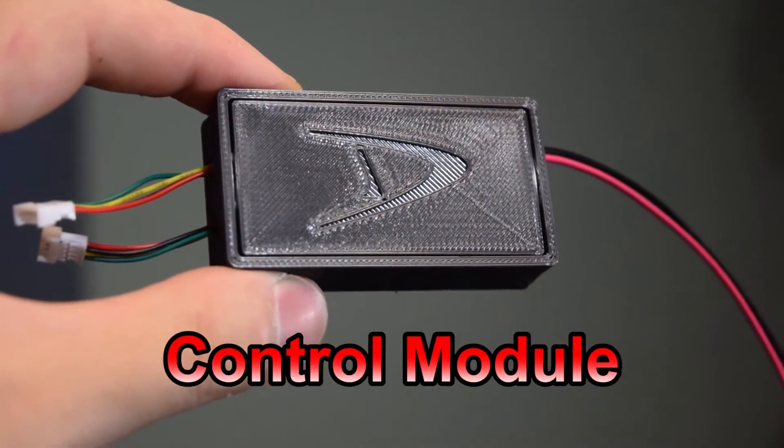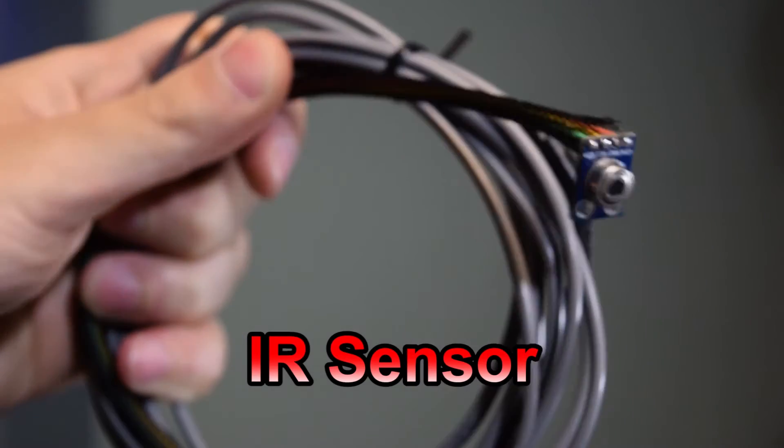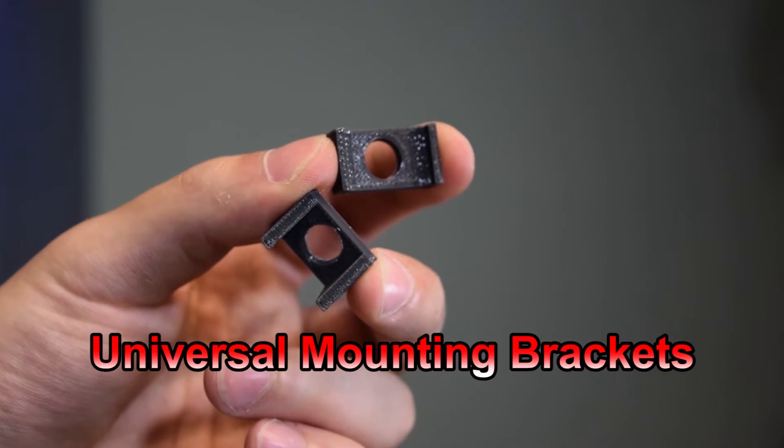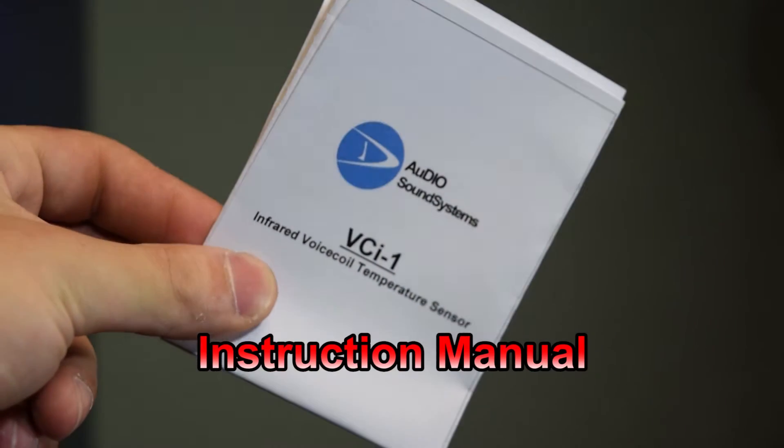The VCI1 package includes the following: control module, IR sensor, OLED display, two universal mounting brackets both angled and straight, and of course the instruction manual.